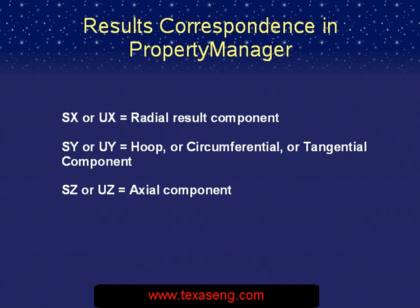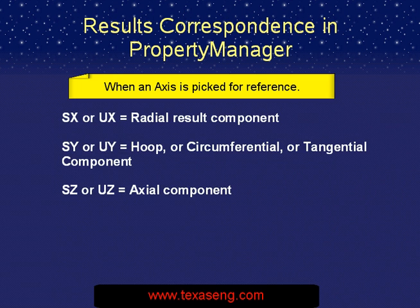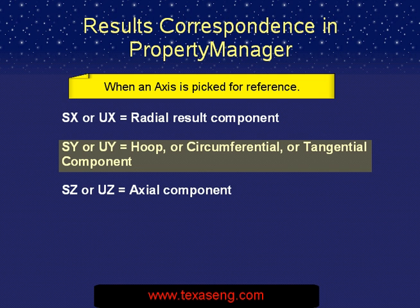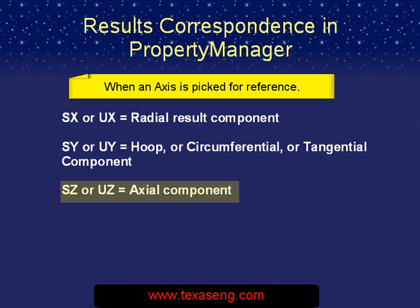Let's look at the correspondence for results in the Property Manager when you select an axis for reference. For stress, SX represents the radial stress and UX represents the radial displacement. The components SY for stress and UY for displacement represent the hoop, circumferential, or tangential component. And SZ or UZ represent the axial components of stress and displacement.